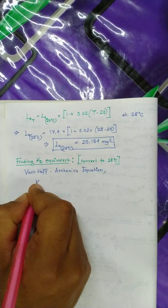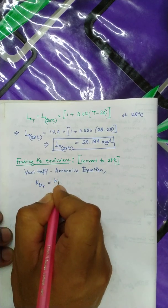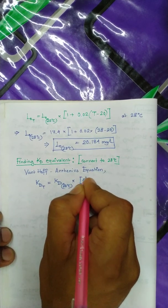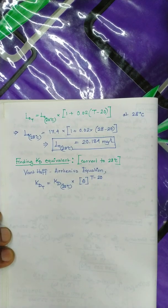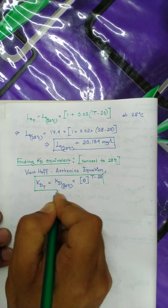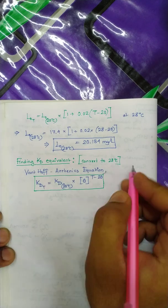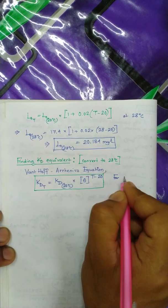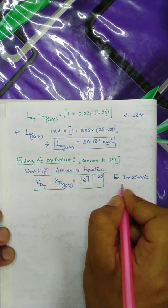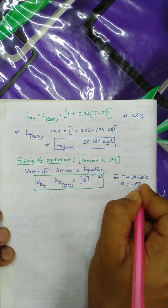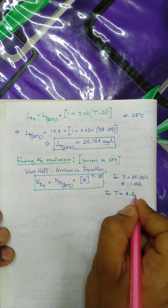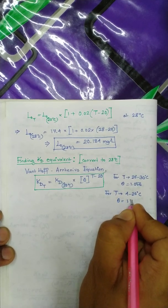The Van't Hoff-Arrhenius equation states: KD at temperature T is nothing but KD at 20 degrees centigrade multiplied by theta to the power (T minus 20). For T from 20 to 30 degrees centigrade, theta is 1.056. For T from 4 to 20 degrees centigrade, theta is 1.135.